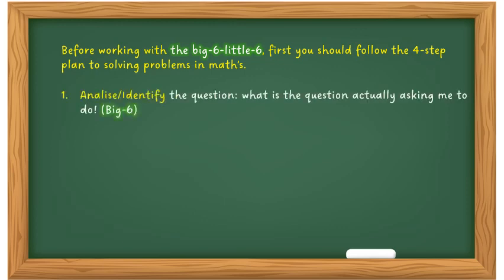So let's have a look. The first thing you have to do is analyze the question, identify the question. What is the question actually asking me to do? And this is what I call the big six. Now the second part is consider the calculations involved, and that's what I call the little six, and you'll see in a minute or two what I mean by that.